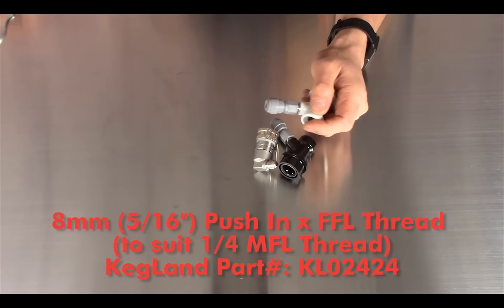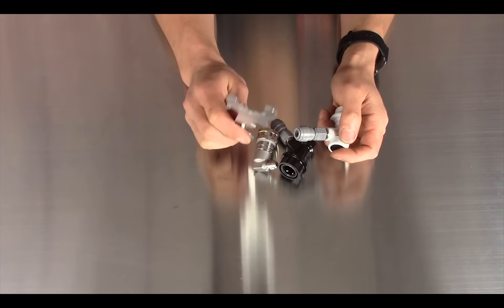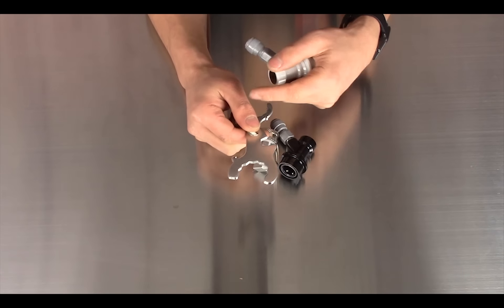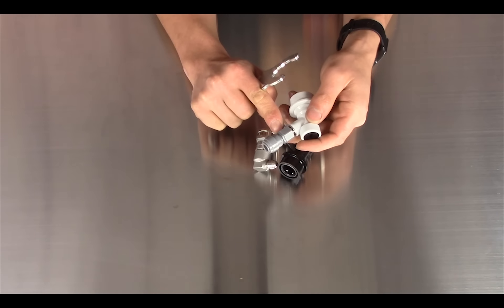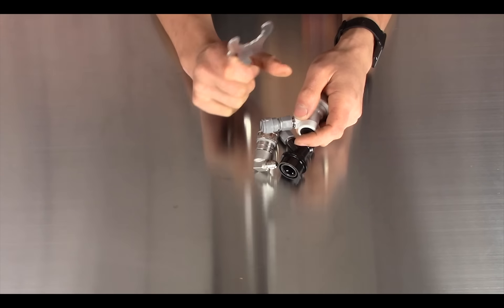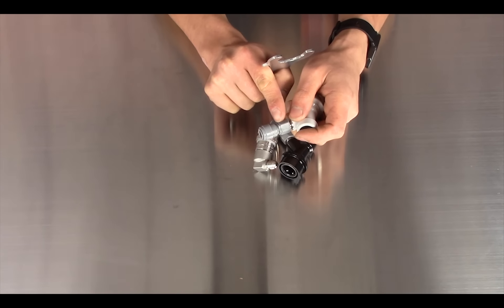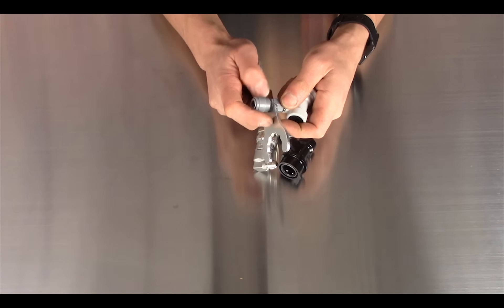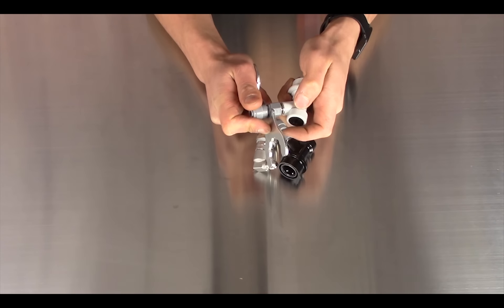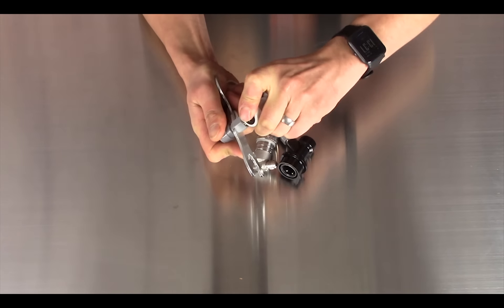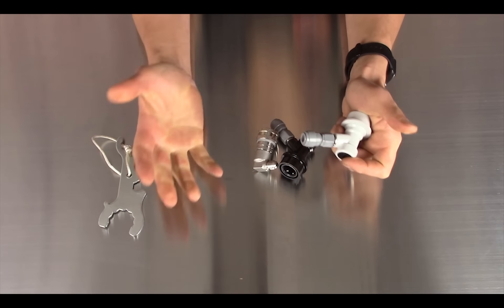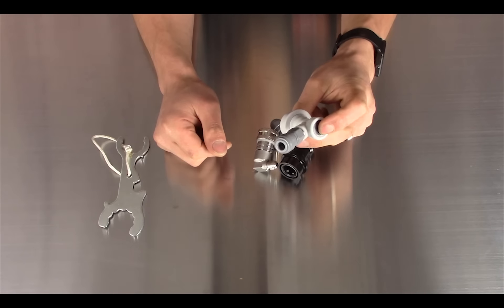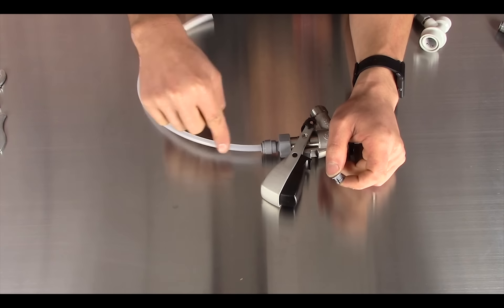And once you've got the fitting done up finger tight you can actually use our 5-in-1 tap tool. Now pretty much anybody who has a draft system should have one of these in their toolkit, they're so handy and pretty much all the things on here are really useful. You'll notice on the hex on the FFL fitting here we've got a larger hex but actually there's a little small step down here and actually this little slot in there will fit with that small step down. So literally just put it on there and after you've done it finger tight it doesn't need much extra, literally about maybe a quarter of a turn like that and that's tight enough. You really don't need to over tighten it. You could possibly strip the threads if you go too tight. So yeah just like quarter of a turn and then you're all good.